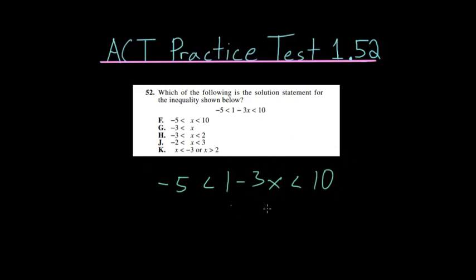So let's try and solve for x by leaving it in the middle, since it looks like we'll be able to do that. What we can do is just subtract 1 from each part of this inequality, and minus 5 minus 1 would be minus 6. 1 minus 1, these cancel out, and we're just left with this minus 3x in the middle, and this is all just less than 10 minus 1, which is simply 9.